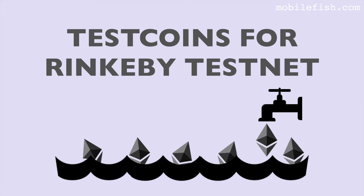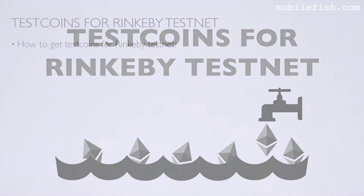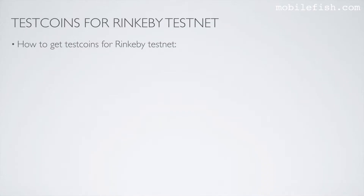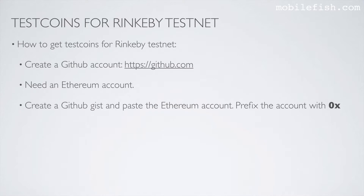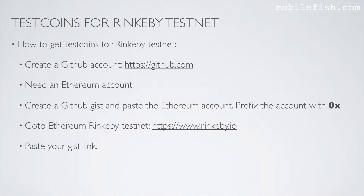In this video I will show you how to get test coins from a faucet for the Rinkeby testnet. The procedure is as follows: create a GitHub account if you don't have one, then you need an Ethereum account. Create a GitHub gist and paste the Ethereum account, prefixed with 0x. Go to Ethereum Rinkeby testnet, paste your gist link and get your ether. I will now demonstrate this procedure.